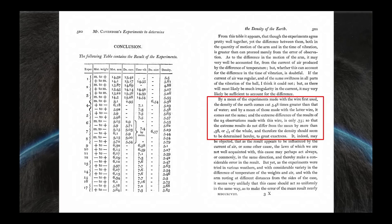By a mean of the experiments made with the wire first used—and let me stop for a second and point out that he actually used two different torsion wires, two different sizes of wire. So for the first one, the density of the earth comes out to 5.48 times greater than that of water. And by a mean of those made with the latter wire, the second wire in other words, it comes out the same. And the extreme difference of the results of the 23 observations made with this wire is only 0.75, so that the extreme results do not differ from the mean by more than 0.38 or 1/14th of the whole. And therefore the density should seem to be determined hereby to great exactness.